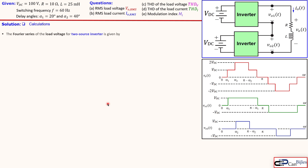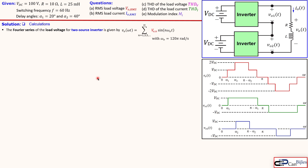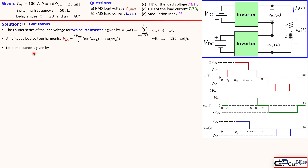For the Fourier series of our load voltage for a two-source inverter, we need the amplitudes — that is the most important part of our analysis. Those are the VON values, and only the odd harmonics are considered. The amplitudes of the load voltage harmonics are given by the expression: (4 V_DC / nπ)(cos(nα1) + cos(nα2)). With one delay angle we had 4V_DC/nπ · cos(nα), and with no delay angles this reduces to 4V_DC/nπ as seen in full-bridge square wave inverters.